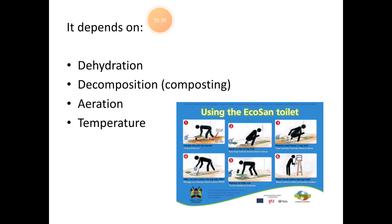The working of eco-san toilets depends on the following important factors: dehydration, decomposition, efficiency, aeration, and temperature. For dehydration, the lowering of moisture content of excreta is done at this stage, usually by evaporation of the moisture, by adding ash, sawdust, or husk to the pit or the tank.